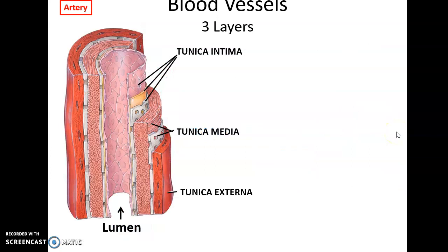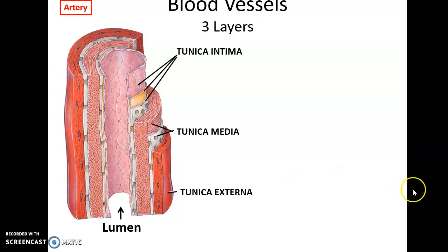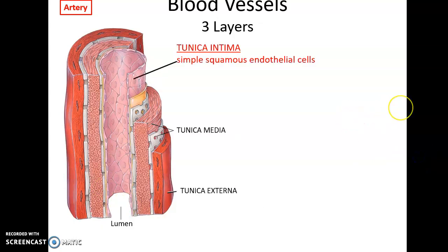When you look at the wall of a blood vessel, such as an artery, you see that it has three layers. It has the tunica interna, the internal layer that lines the inside of the blood vessel. Then the middle layer is tunica media, and then the outer layer is tunica externa. The space inside is referred to as the lumen — that is, of course, where you would find the blood. Tunica intima is made up of simple squamous epithelial cells, very flat, smooth cells, to keep the inside of the vessels smooth and reduce friction.